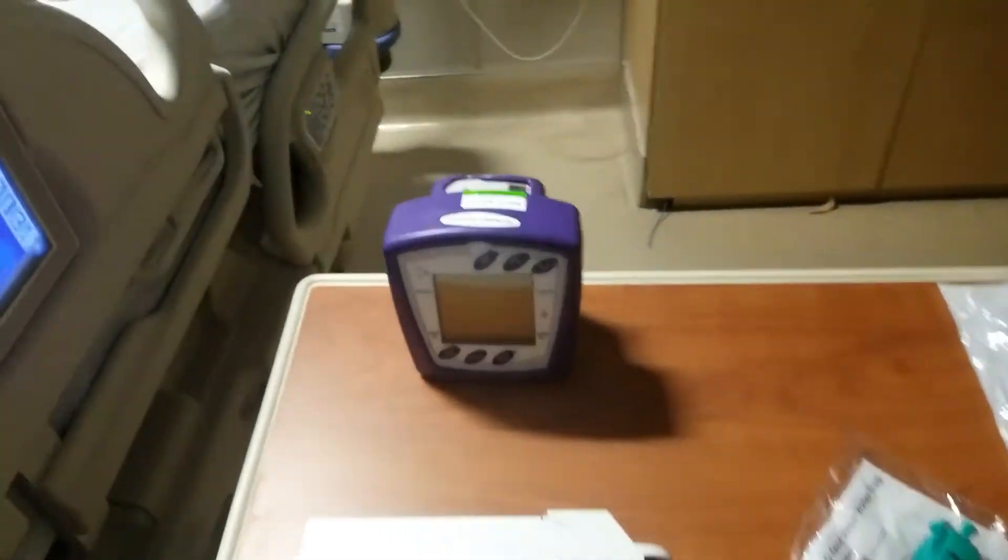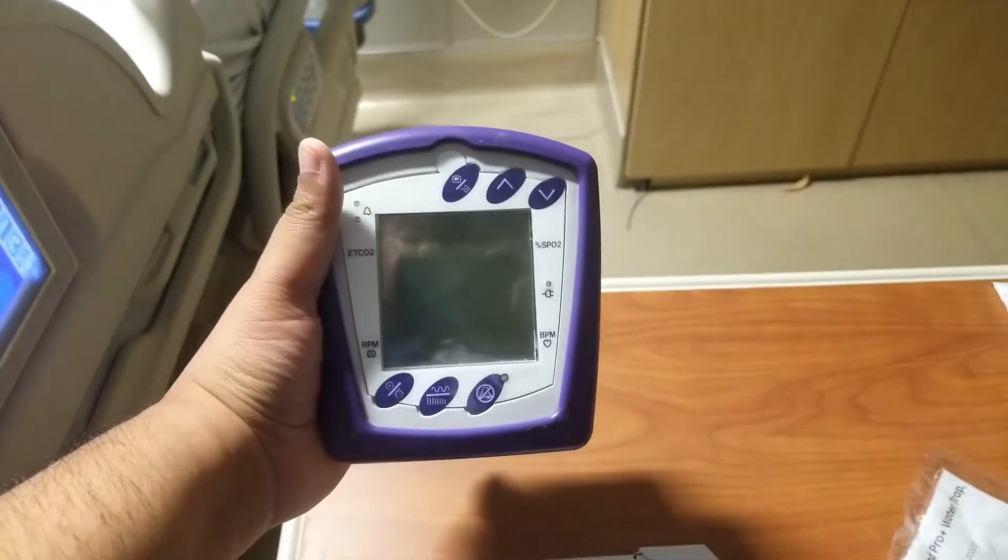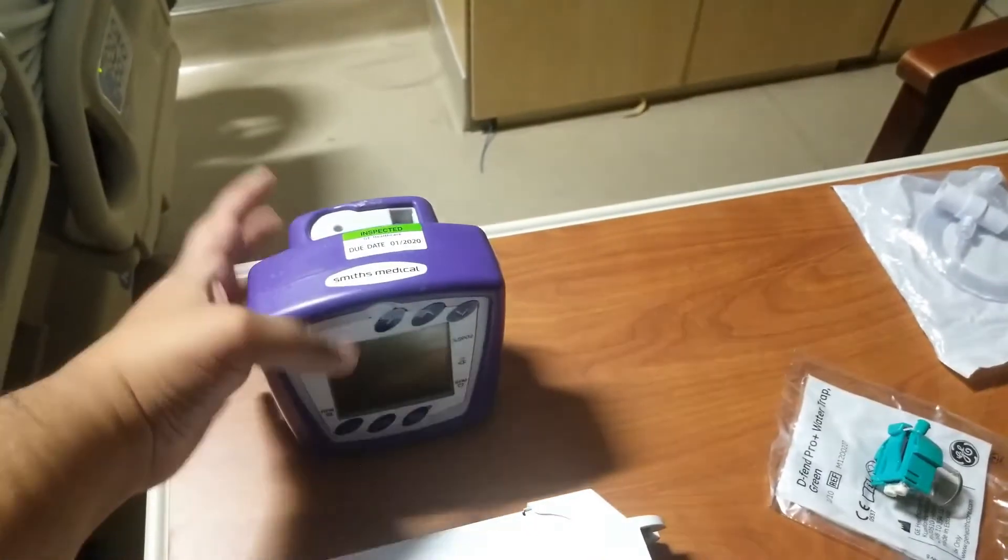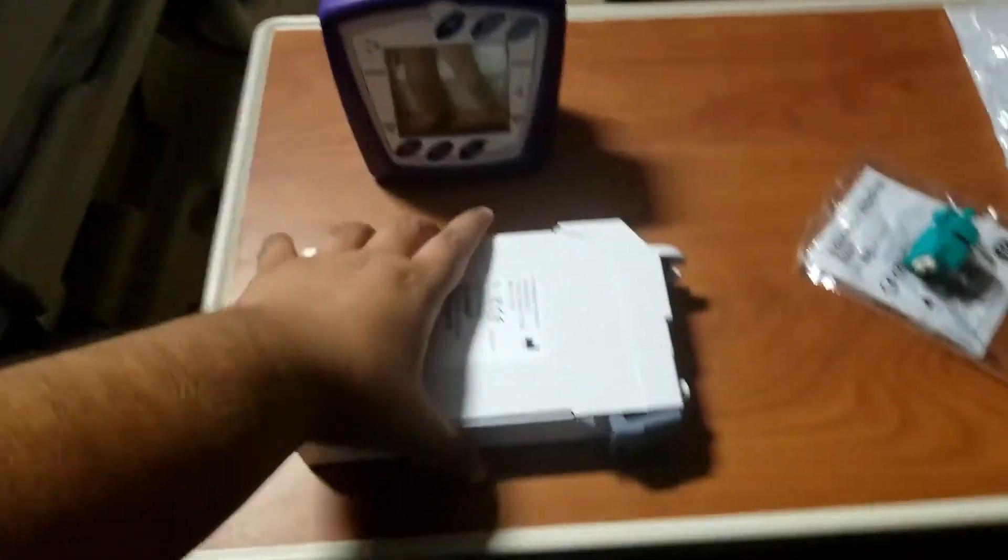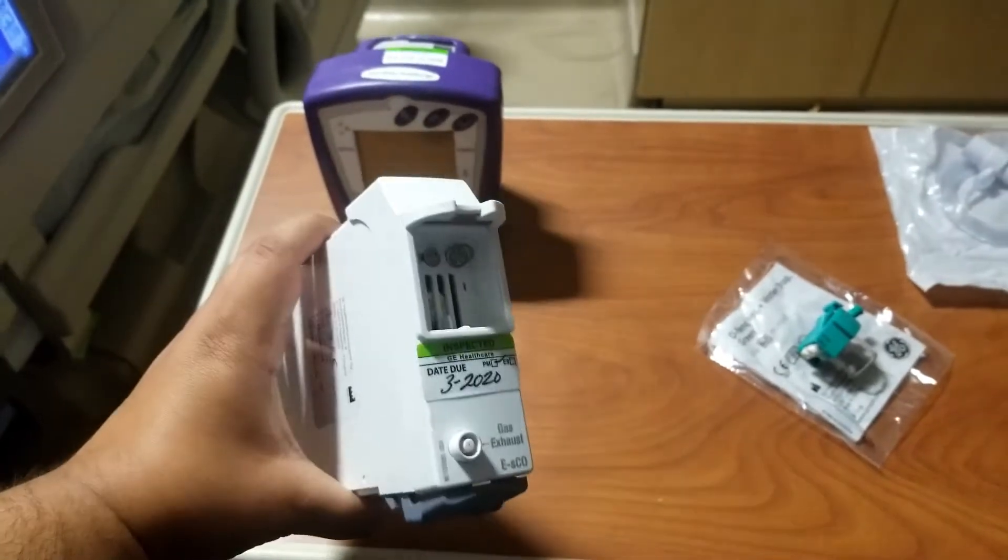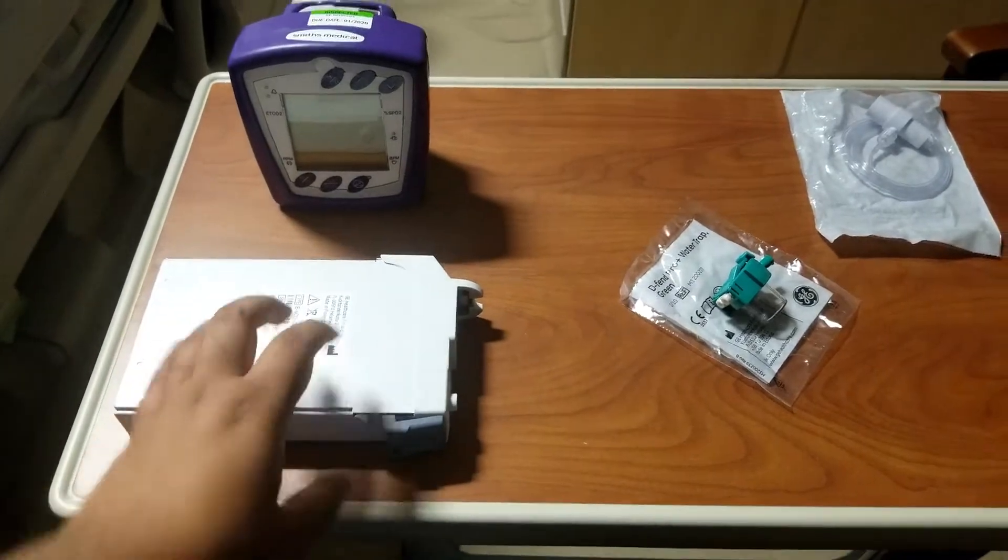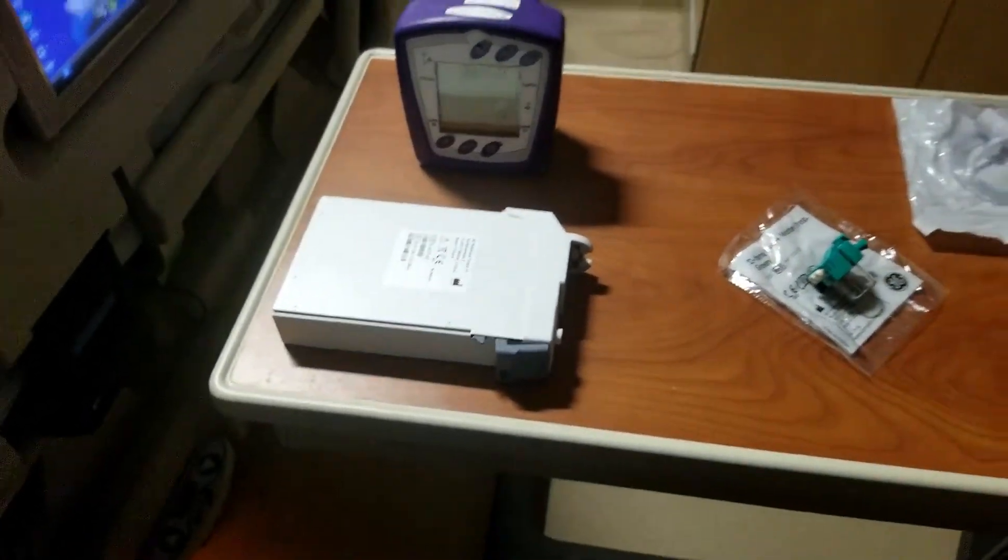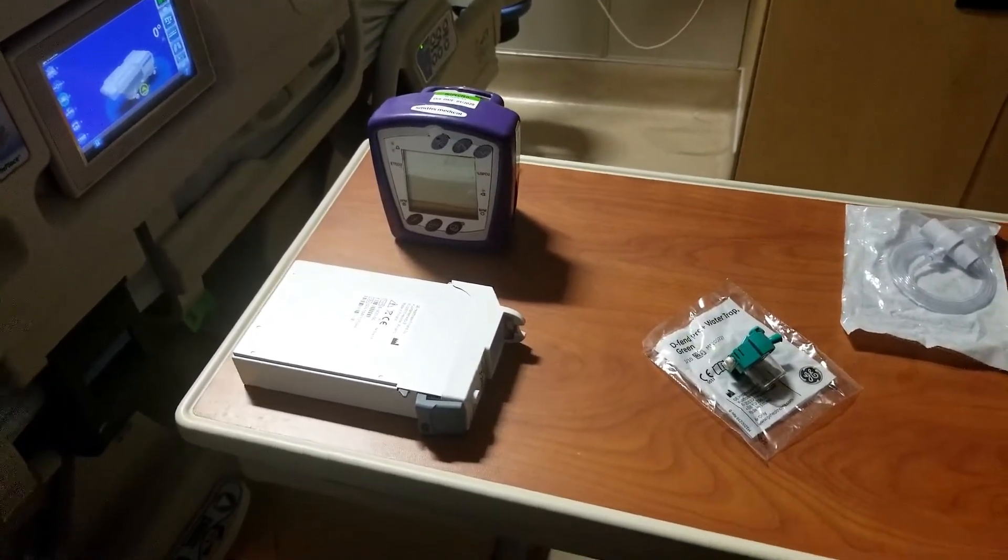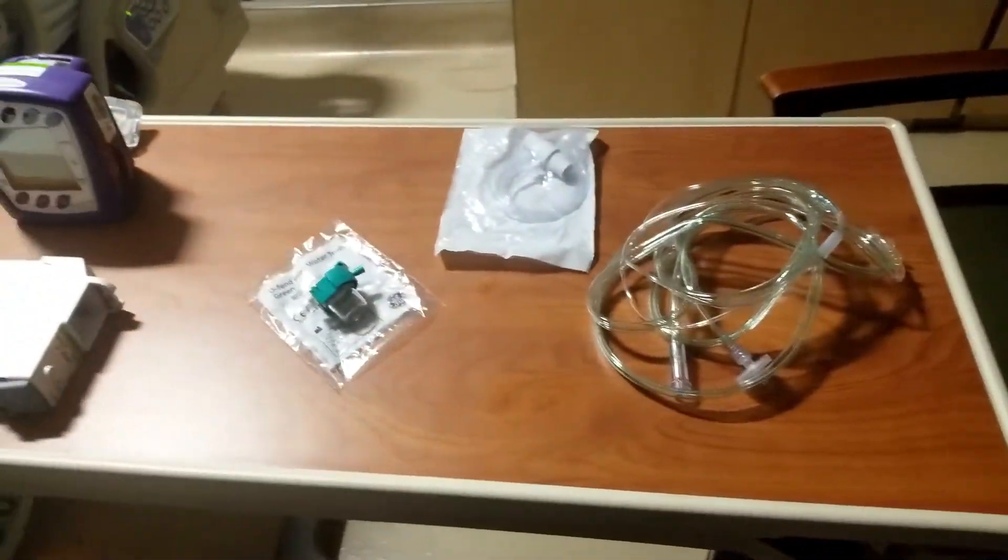We have here our portable end tidal CO2 monitor. This is the one that we take to codes and rapids. This is the one that we can insert into our GE monitors and these are kept on the B side under the cardiac monitor at the nurse's station. If you need that one and you're measuring it on a patient who's in the room, that's where you go. And then we have our supplies here.